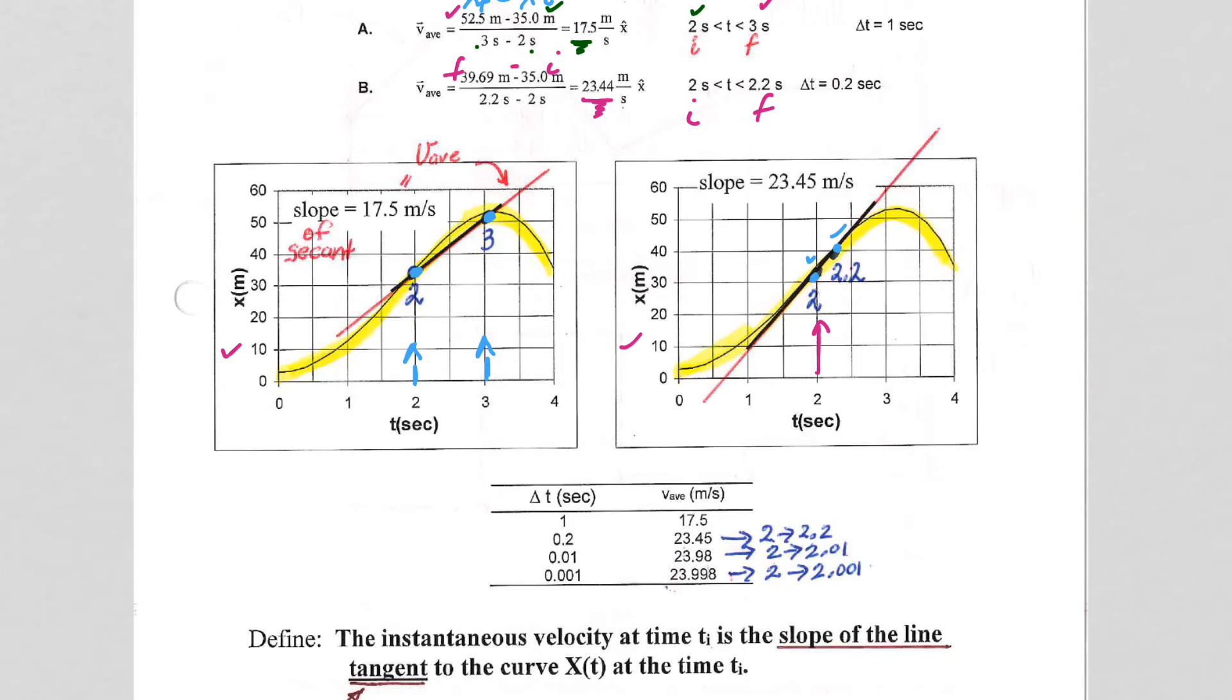Here we've gone from 2 to 3, here 2 to 2.2, but now let's go from 2 to 2.01. Instead of 23.45, we get 23.98. What if we want to go right on top of 2 even more, from 2 to 2.001? We get 23.99.